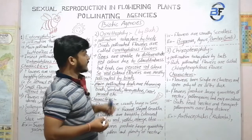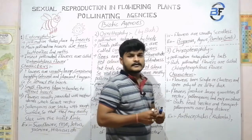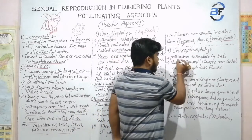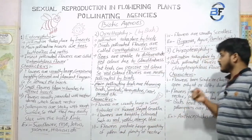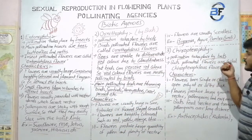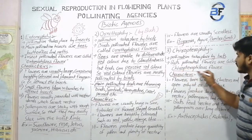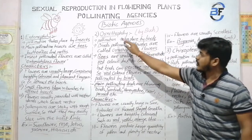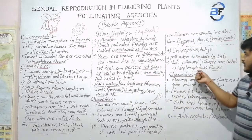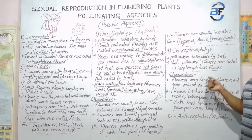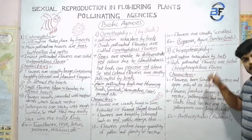Next to Ornithophily technique, we study Chiropterophily. In Chiropterophily, pollination is carried out by bats — that means pollination is mostly done by bats. Bat-pollinated flowers are called Chiropterophilous flowers. Now the characteristics of Chiropterophilous flowers.